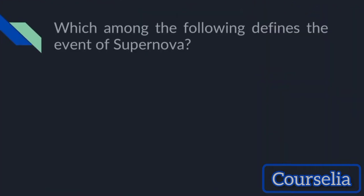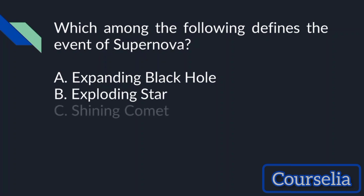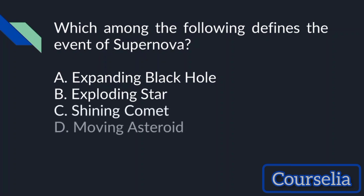Which among the following defines the event of a supernova? Options: A. Expanding Black Hole, B. Exploding Star, C. Shining Comet, D. Moving Asteroid. The answer is Exploding Star.